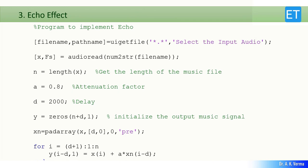This is the program. By executing uigetfile, I select my audio file, and by the audioread function, all samples come into X and the sample rate into Fs. N finds the length of that captured audio. I am taking A as 0.8 and the delay as 2000, meaning the delayed input stream will be added to the actual signal. Let me run this program and see how the delay echo effect works.